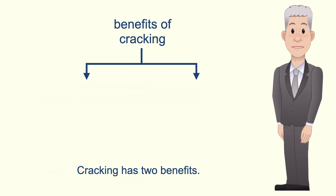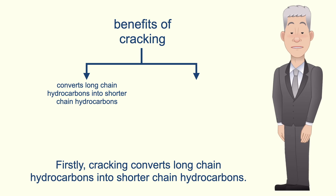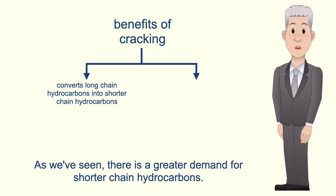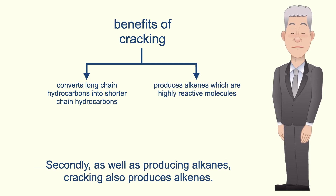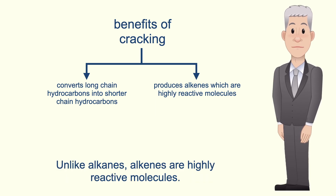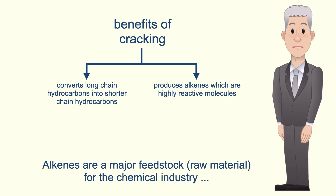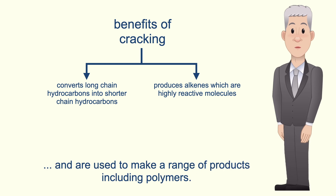Cracking has two benefits. Firstly, cracking converts long chain hydrocarbons into shorter chain hydrocarbons, and as we've seen there's a greater demand for shorter chain hydrocarbons. Secondly, as well as producing alkanes, cracking also produces alkenes, and unlike alkanes, alkenes are highly reactive molecules. Alkenes are a major feedstock or raw material for the chemical industry and are used to make a range of products including polymers.